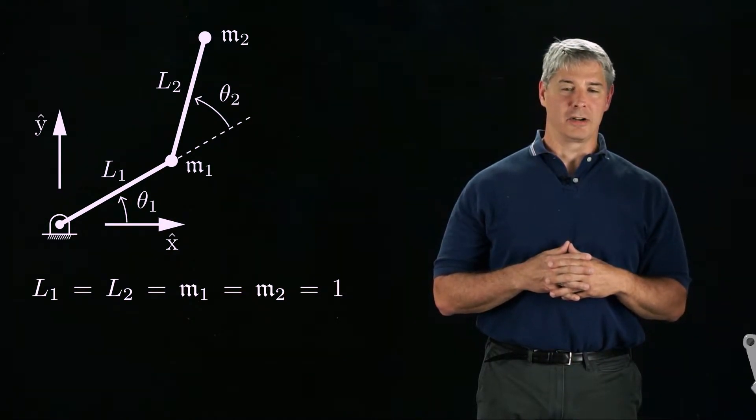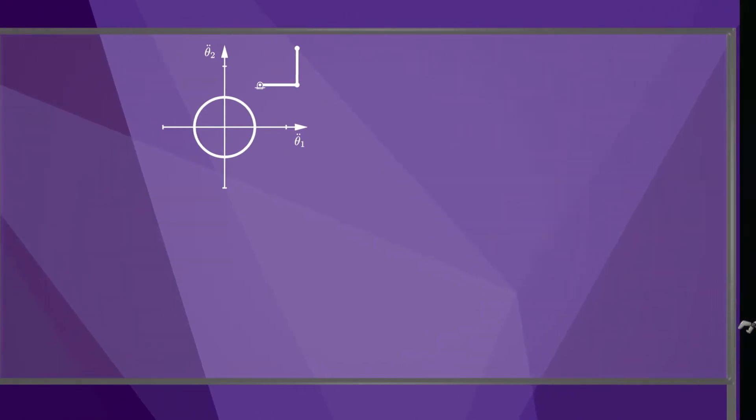Assume that the robot initially has zero velocity and consider a circle of accelerations in the joint space at this robot configuration. Then this circle maps through the mass matrix to an ellipse of joint torques. This ellipse can be interpreted as a direction-dependent mass ellipsoid. Certain joint acceleration directions require larger torques than others.